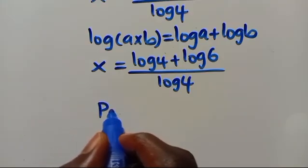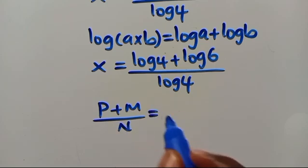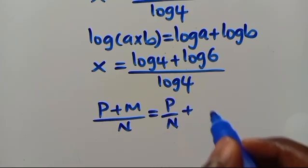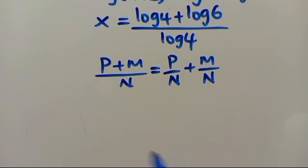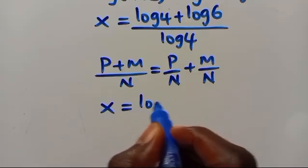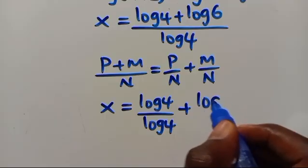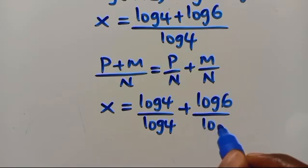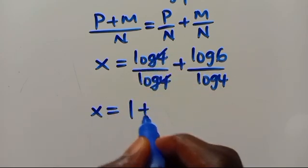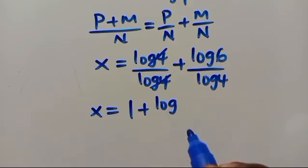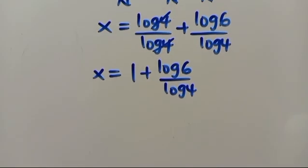Recalling that (p + n) over n equals p over n plus 1, we can split the fraction. So x equals log 4 over log 4 plus log 6 over log 4, which gives x equals 1 plus log 6 over log 4.